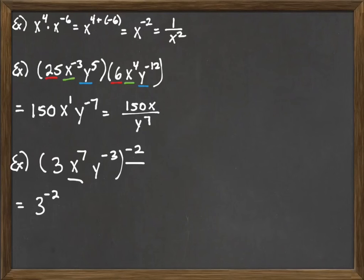That brings us to x to the seventh raised to the negative second. Remember, when we take a power and raise it to another power, we multiply the exponents. So seven times negative two is negative 14. Then we have y to the negative third raised to the negative second. Again, we multiply. Negative three times negative two makes that y to the positive sixth power.